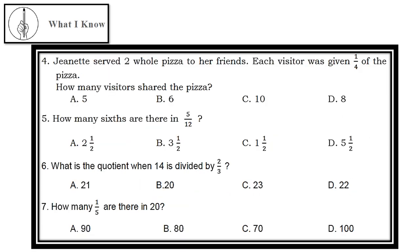Number 4: Jeanette served 2 whole pizzas to her friends. Each visitor was given one-fourth of the pizza. How many visitors shared the pizza? A. 5, B. 6, C. 10, D. 8.